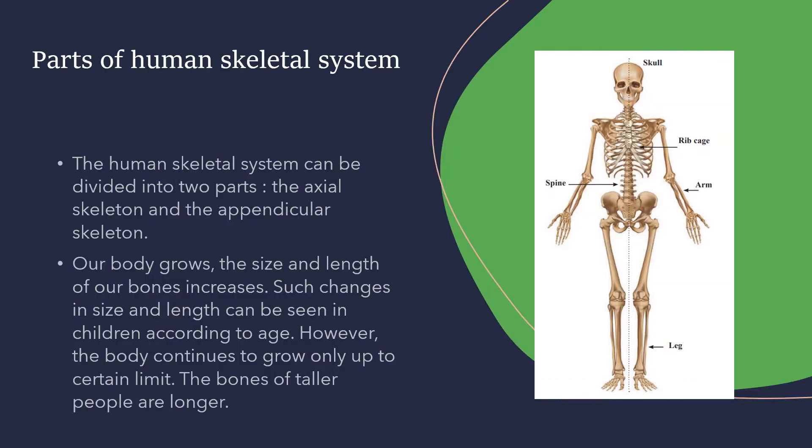Parts of the human skeletal system — the human skeleton can be divided into two parts: the axial skeleton and the appendicular skeleton.